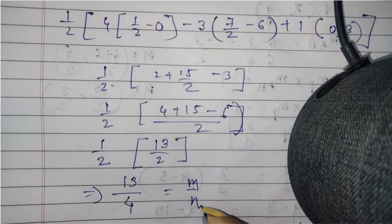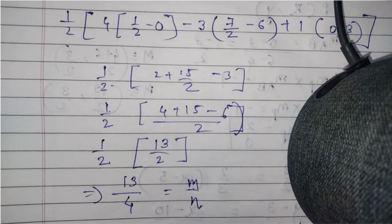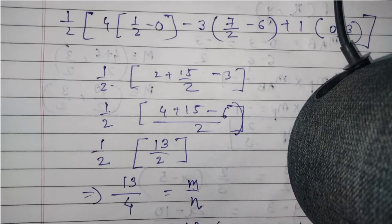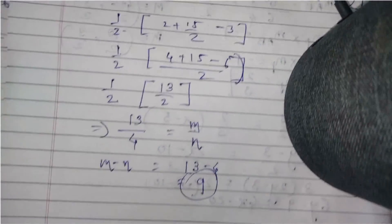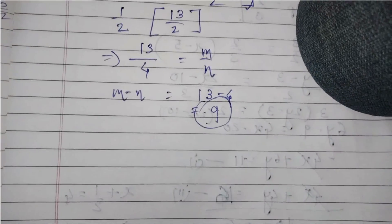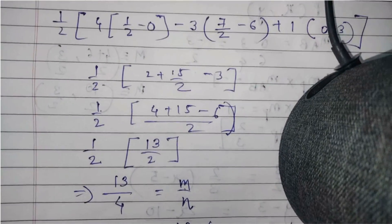The area equals 13/4, which equals m/n as given in the question. So m - n = 13 - 4 = 9. Thank you.